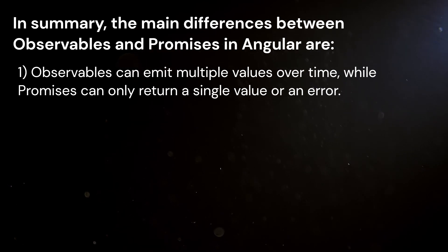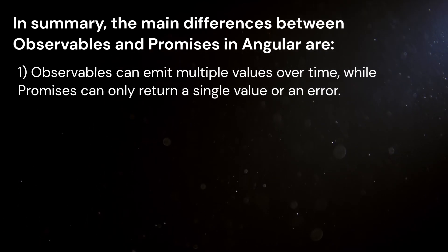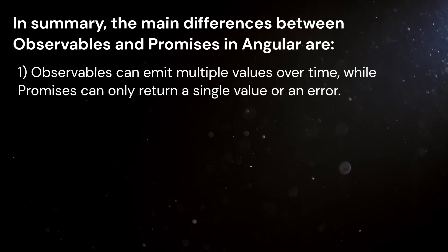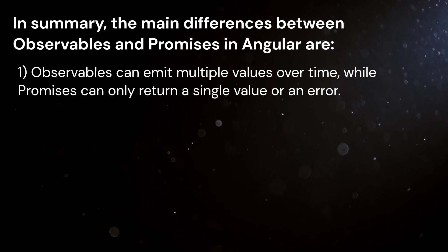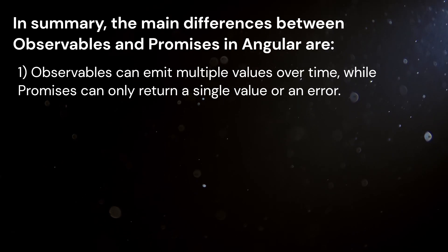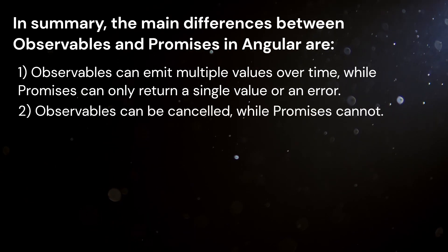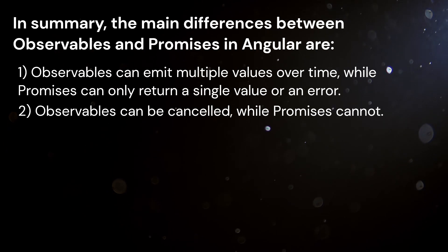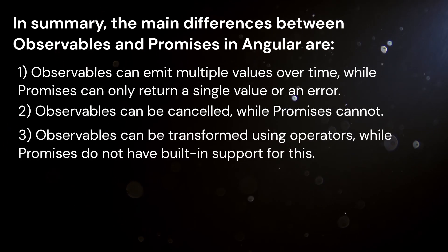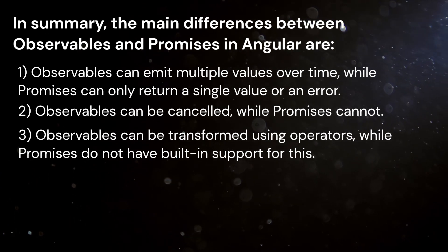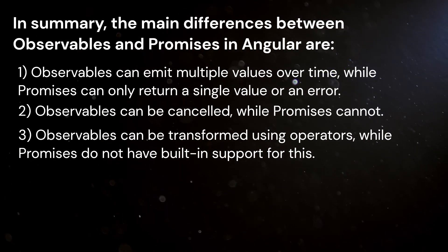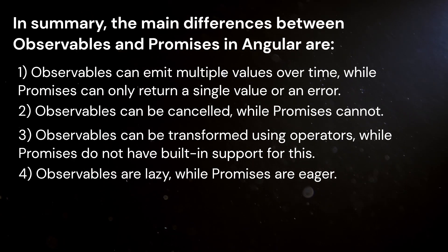In summary, the main differences between observables and promises in Angular are: Observables can emit multiple values over time, while promises can only return a single value or an error. Observables can be cancelled, while promises cannot. Observables can be transformed using operators, while promises do not have built-in support for this. Observables are lazy, while promises are eager.